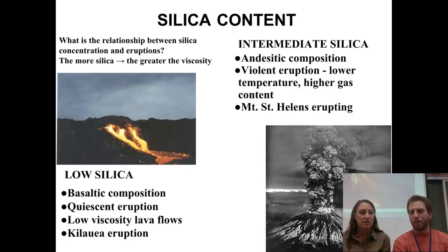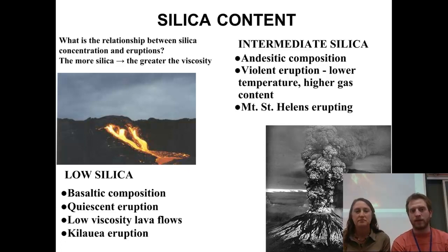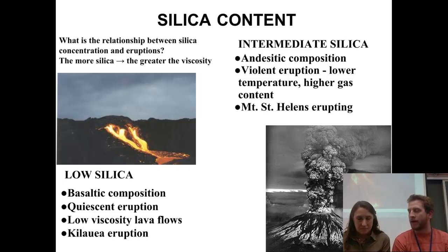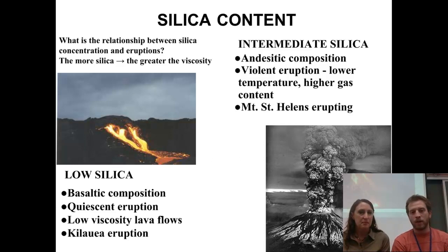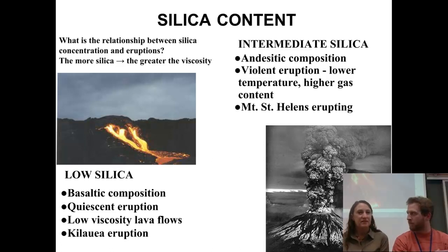The two examples we have here: with low silica, that's more like Kilauea out of Hawaii — more basaltic. Since it's low silica, it's going to be more basalt. We get these really quiescent, really quiet eruptions, and it just flows — that ropey pahoehoe flow we were talking about before.